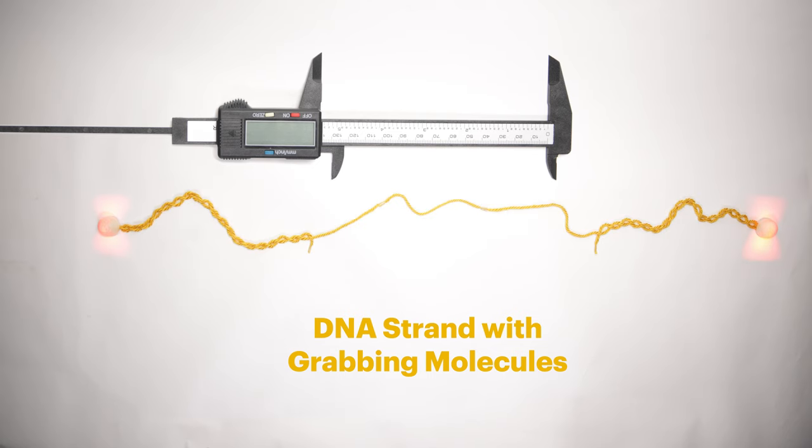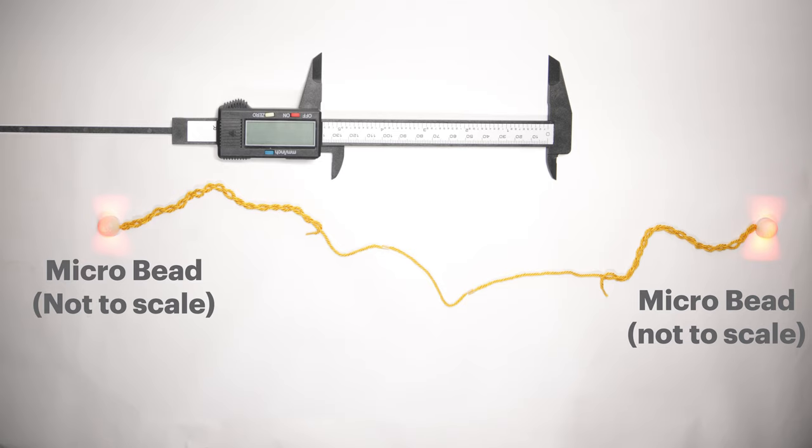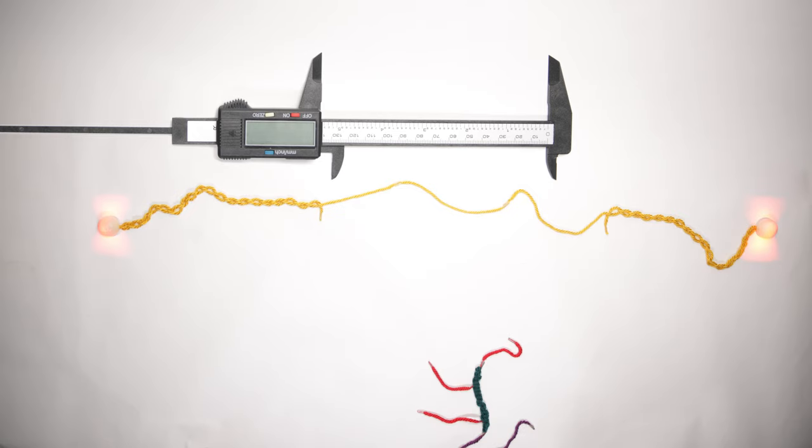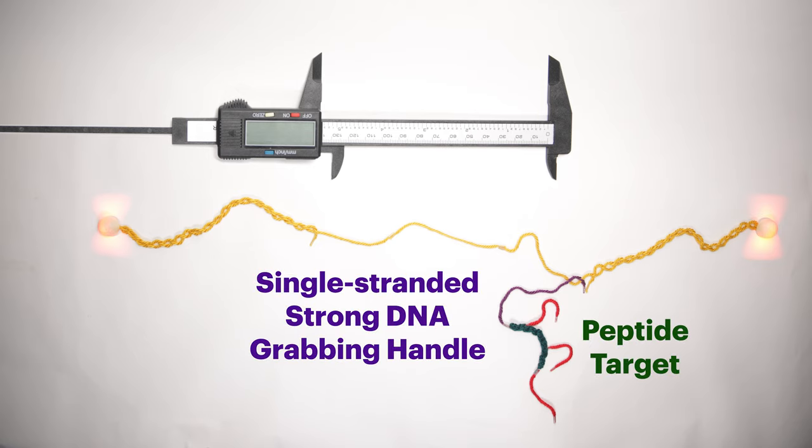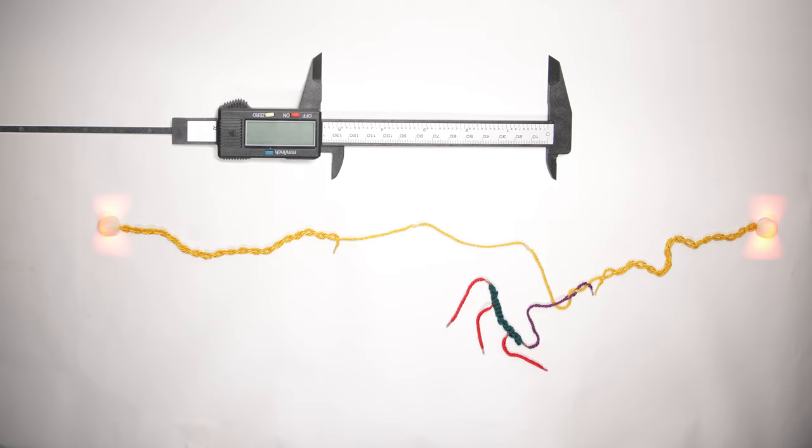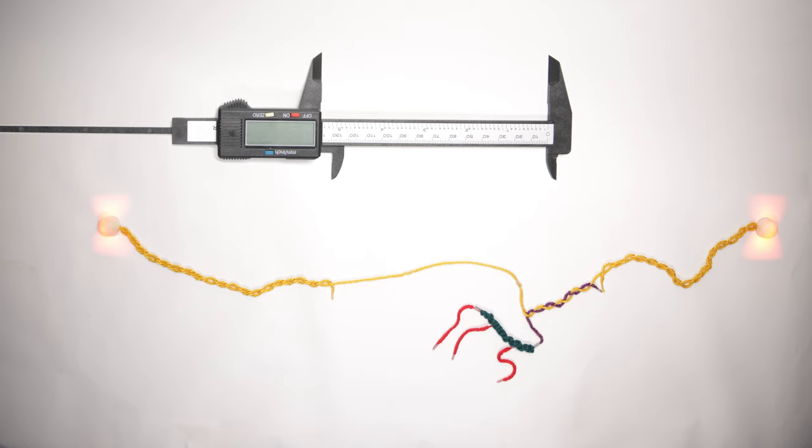The DNA caliper is illustrated here by the yellow string. It is attached to two microbeads. To map the shape of a protein of interest illustrated by the green peptide, we attach a single-stranded strong DNA grabbing handle shown in purple to one end of the peptide that binds with one side of the DNA caliper.